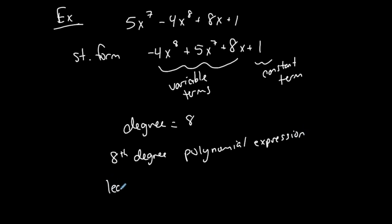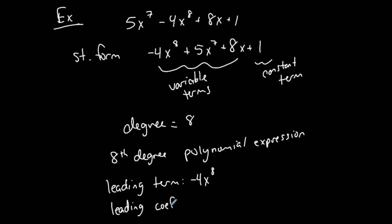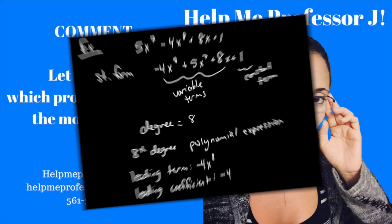Let's also identify the leading term. When in standard form, the leading term is negative 4x to the 8th. The leading coefficient — the number attached to that term — is negative 4. So classifying polynomials and identifying their parts isn't too difficult. Going forward, you'll be adding, subtracting, multiplying, and dividing polynomials. This video covers what a polynomial is, what they look like, how we label and classify them, and the terminology involved.